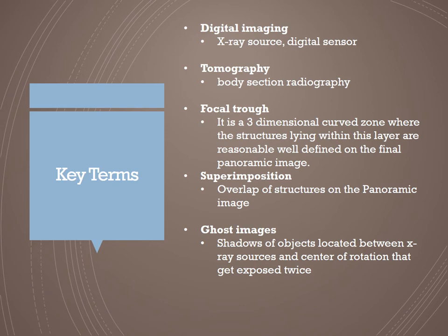Some key terms used in this lecture: digital imaging uses a source and digital sensor to capture the image; tomography is body section radiography; the focal trough is a three-dimensional curved zone where structures lying within this layer are reasonably well defined on the final panoramic image; superimposition refers to the overlap of structures seen on the panoramic image; and ghost images are shadows of objects located between the x-ray source and center of rotation that get exposed twice.